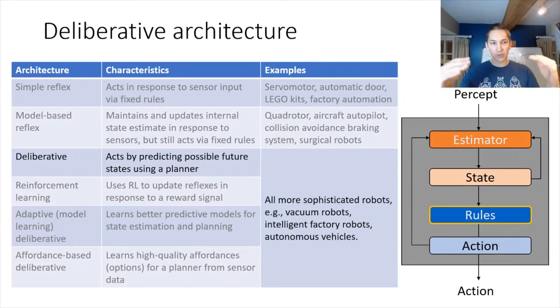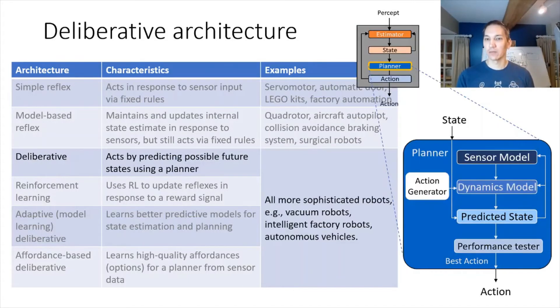We'll be focusing mostly on these deliberative architectures. The first deliberative architecture replaces the rules in the model-based reflex controller with a more sophisticated component, which is called a planner. This planner actually tries to model how things change in the world using some dynamics model and possibly a sensor model as well. It predicts the state that might occur through possible future actions. These actions are generated through some sort of mechanism. There's many different action generation mechanisms we'll talk about in this class. But it predicts multiple states and then tries to pick the action that's the best through some sort of performance tester.